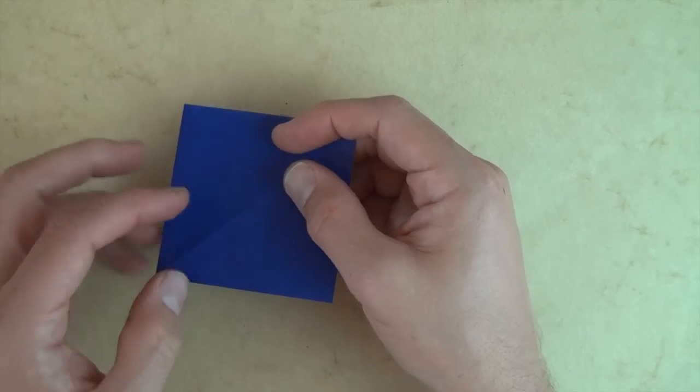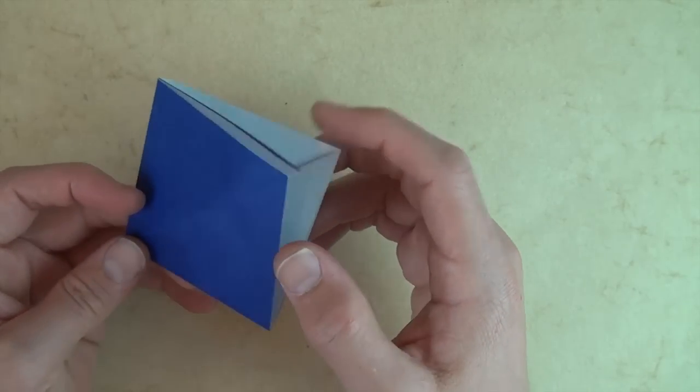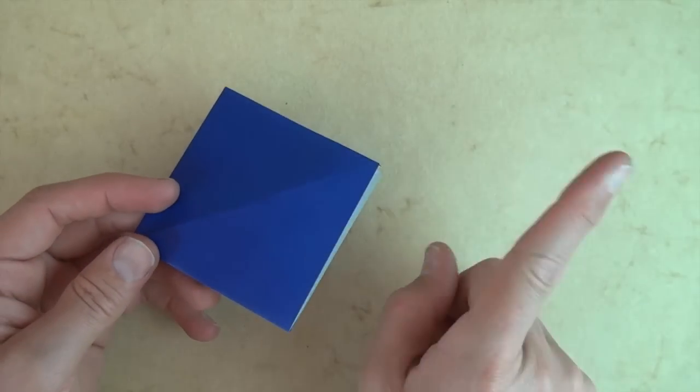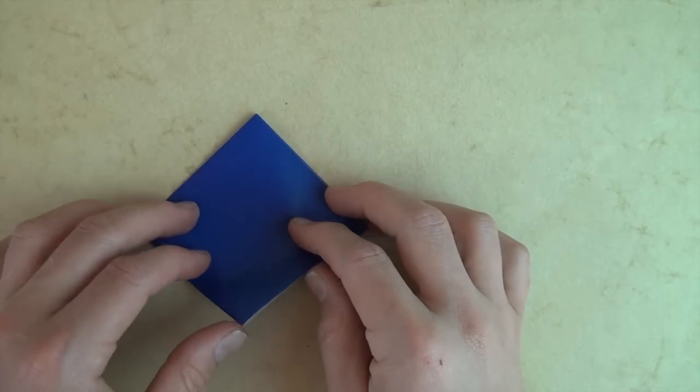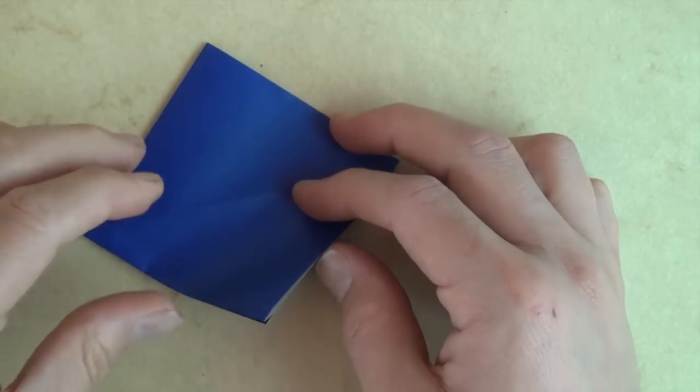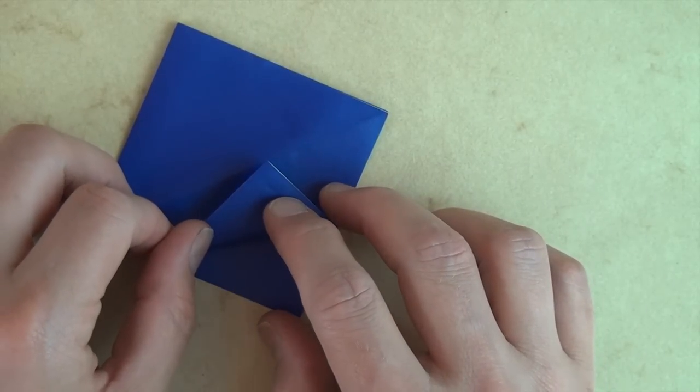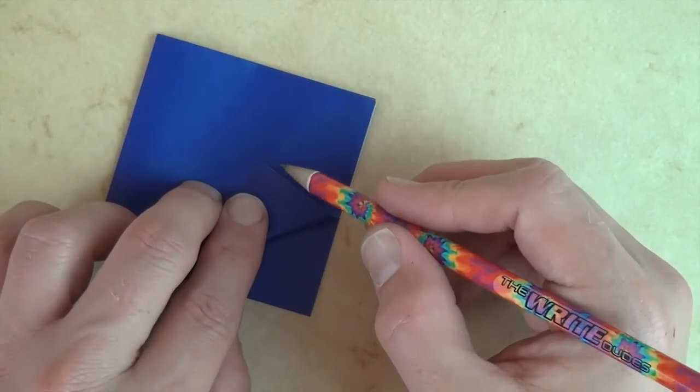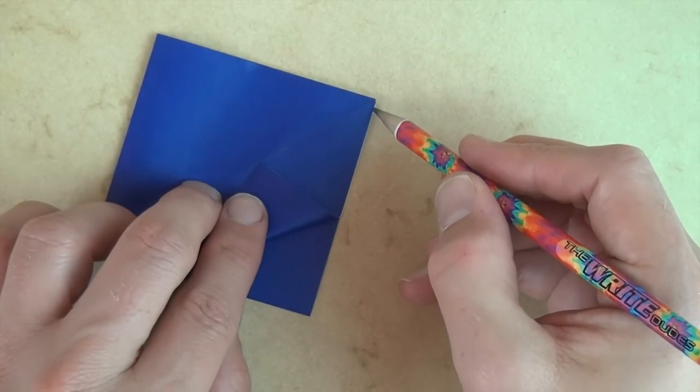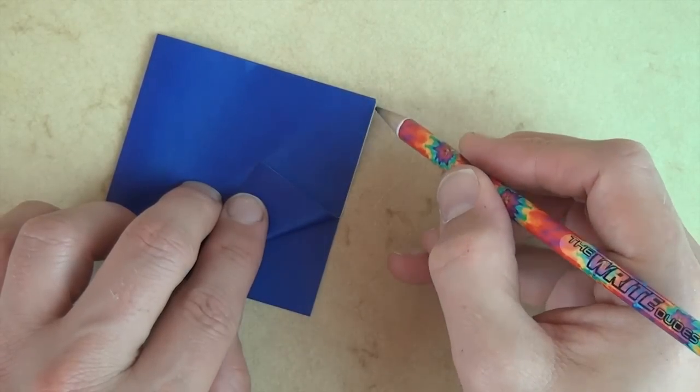Let's orient it so that these corners are pointing to the right and now let's fold this front flap up so that the length of this crease is equal to the length of this edge.